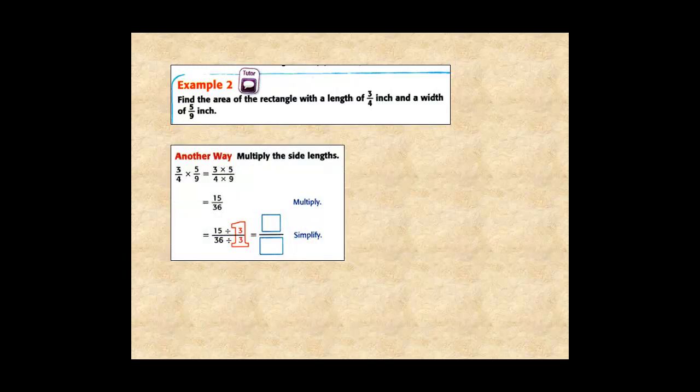Multiply numerators and denominators for 15 over 36. Then simplify by dividing numerator and denominator by 3 for the product and the area of the rectangle, 5 twelfths square inches.